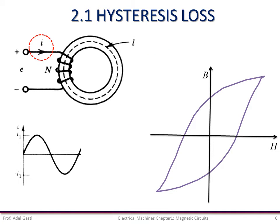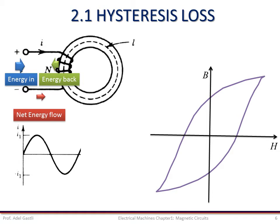The hysteresis loops are obtained by slowly varying the current I of the coil over a cycle. When the current is varied through one cycle, during some interval of time energy flows from the source to the coil-core assembly, and during some other interval of time energy returns back to the source. However, the energy flowing in is greater than the energy that is returning back to the source. Therefore, during one cycle variation of the current and flux intensity, there is a net energy flow from the source to the coil-core assembly.